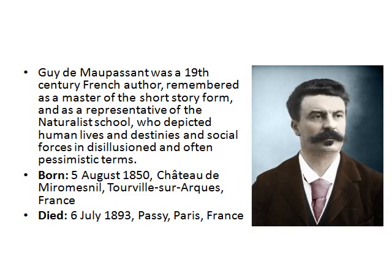Guy de Maupassant was a 19th century French author remembered as a master of the short story form and as a representative of the naturalist school, who depicted human lives and destinies and social forces in disillusioned and often pessimistic terms. He was born on 5th August 1850 and died on 6th July 1893 at Passy, Paris, which is located in France.